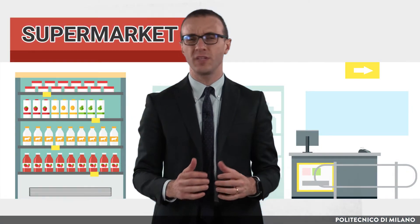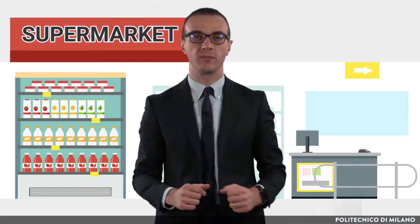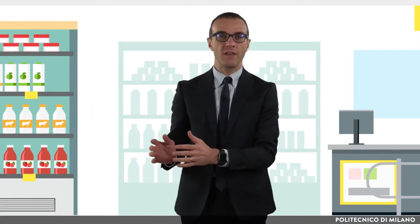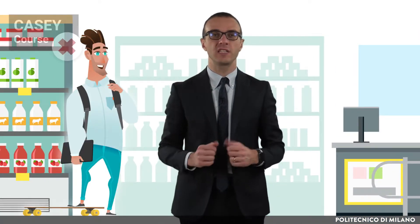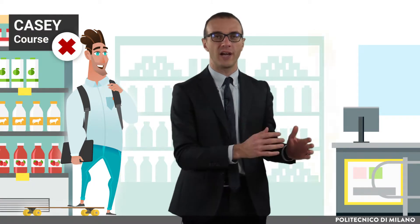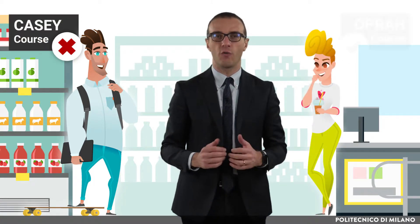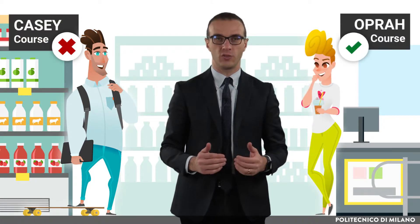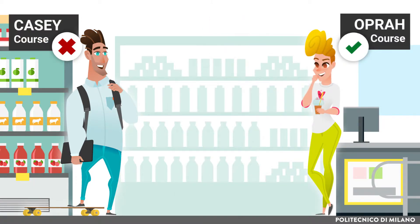In order to better understand operations, let's start with an example taken from our daily life: grocery shopping. On the left, you can see Casey — he did not attend the operations course. On the right, you can see Ofra, who attended the operations course.